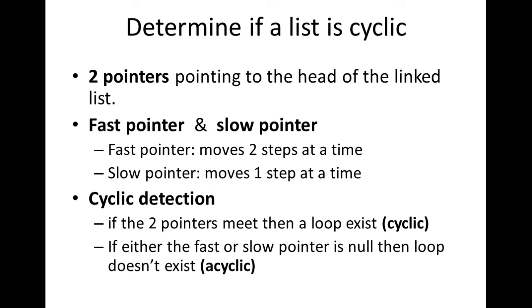To determine if a linked list is cyclic: if the fast and slow pointers meet at the same node, then a loop exists. If either the fast or the slow pointer is null, then a loop does not exist — meaning the list is acyclic and does not contain a loop.